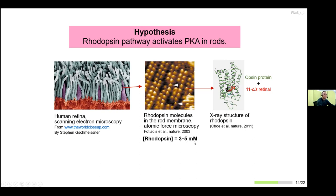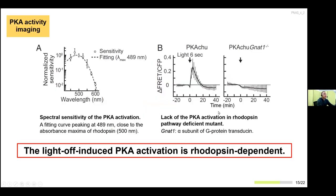Next, I wanted to identify the responsible photoreceptor molecule. The first candidate is rhodopsin, expressed in rod outer segments at extremely high concentrations of 3 to 5 millimolar. I did two analyses: spectral sensitivity analysis, stimulating Pikachu retina with seven different colors of light from blue to red and plotting efficiency of PKA activation as a function of wavelength, fitting with the Govardovskii template to obtain an estimated peak at 489 nanometers — close to the absorbance maximum of rhodopsin. Involvement of rhodopsin was further confirmed using GNAT1 knockout retina, which didn't show light-off-induced PKA activation.